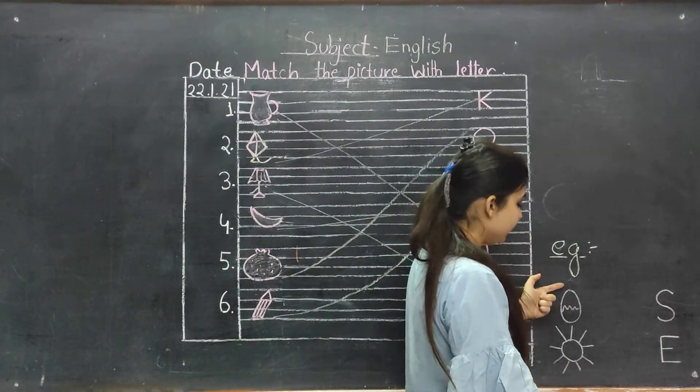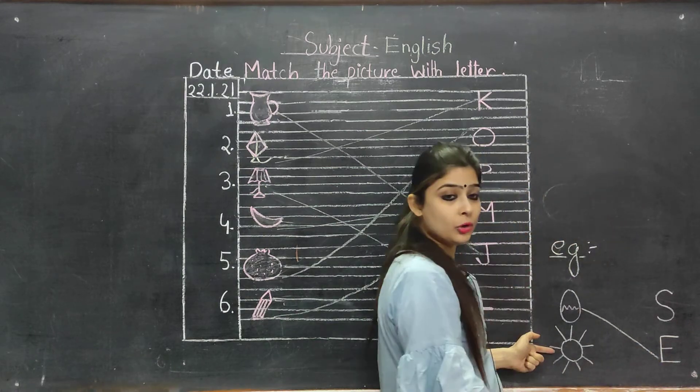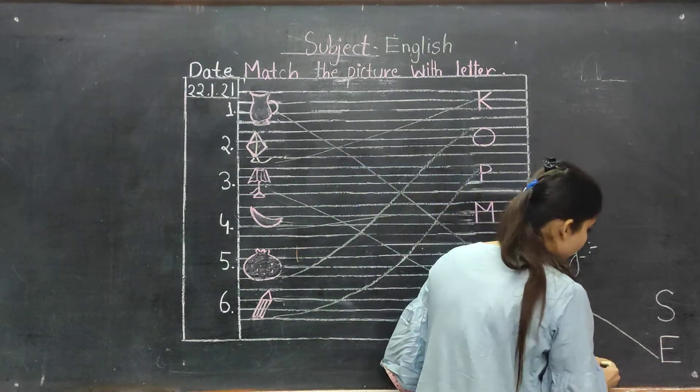This is a picture of egg, E for egg, and this is a picture of sun, S for sun.